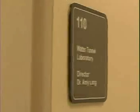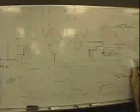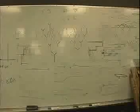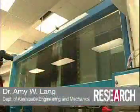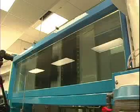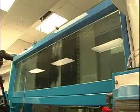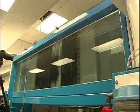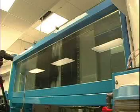We have a water tunnel facility and we're very interested in looking at how patterning a surface can reduce drag or control the boundary layer. The system that we use is known as digital particle image velocimetry, and basically what we do is we seed the flow with particles and then shine a laser sheet into the water.